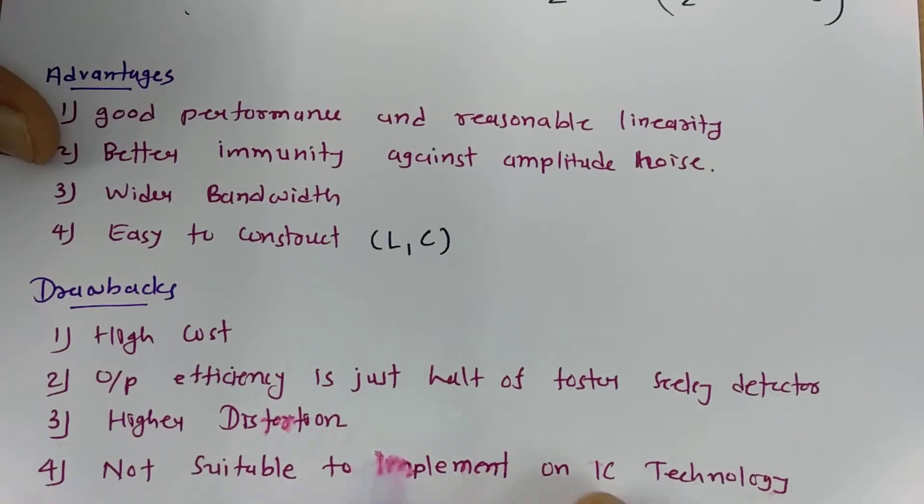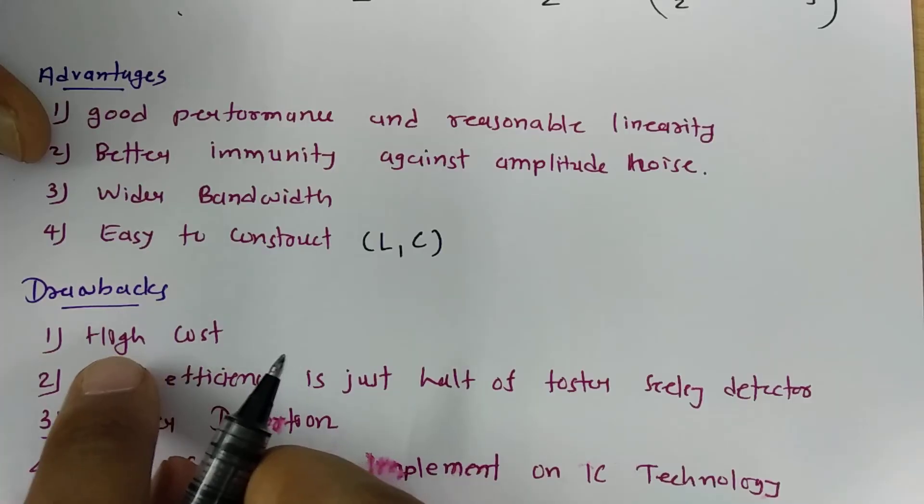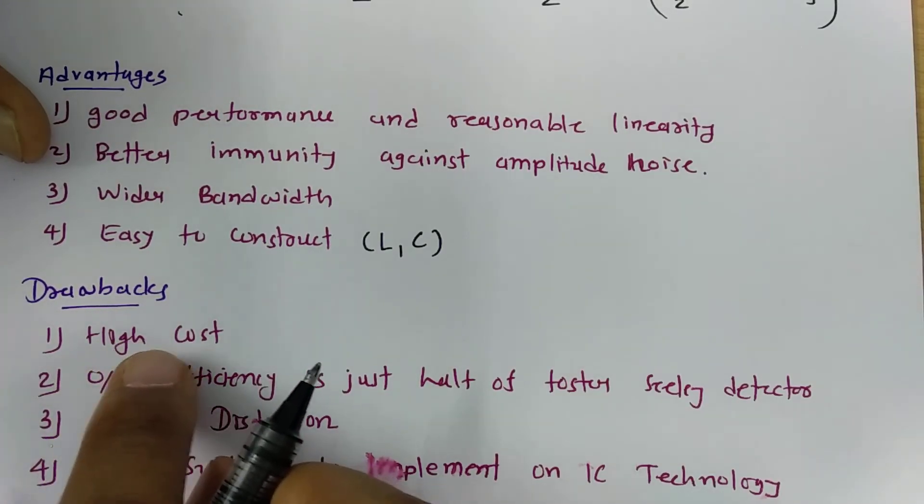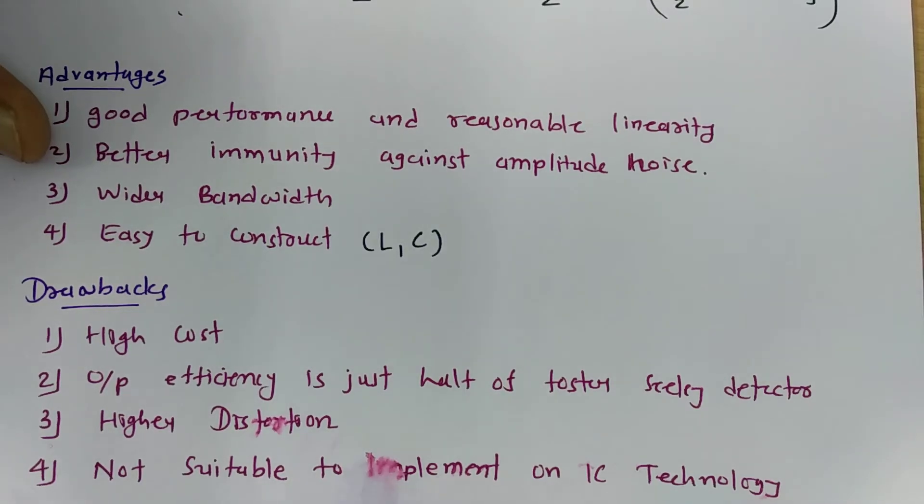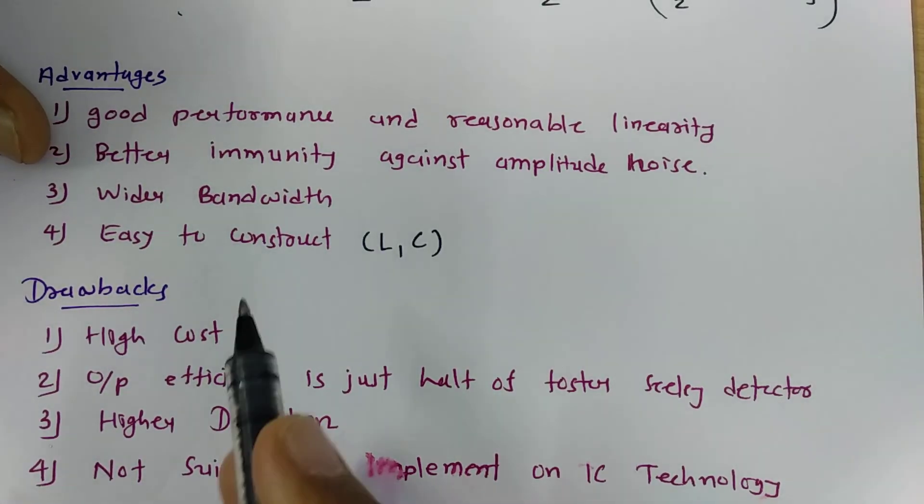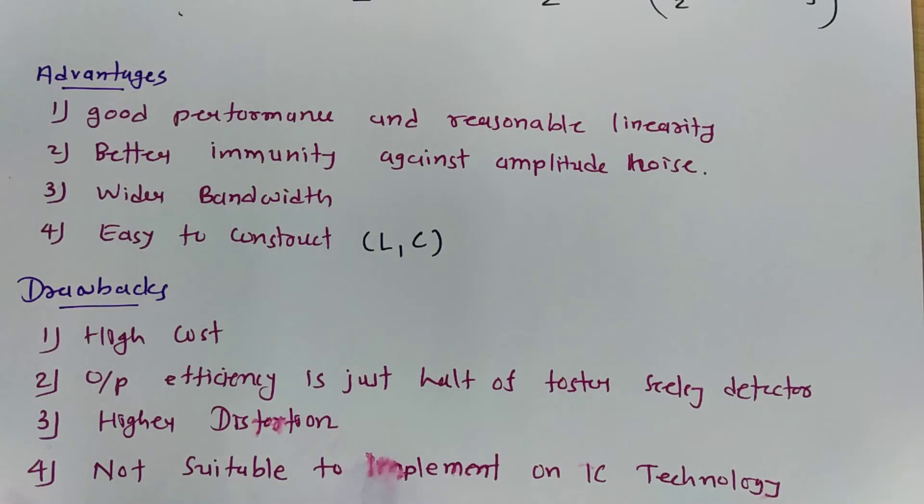Now there are few drawbacks. As we have transformer and discrete components this circuit is costly. Output efficiency is half of the Foster-Cilley that we have already derived. It has lower distortion with respect to Foster-Cilley but still there is a distortion of phase which we cannot remove, and it is not suitable to implement with IC technology. So these are the disadvantages which is there with radio detector.